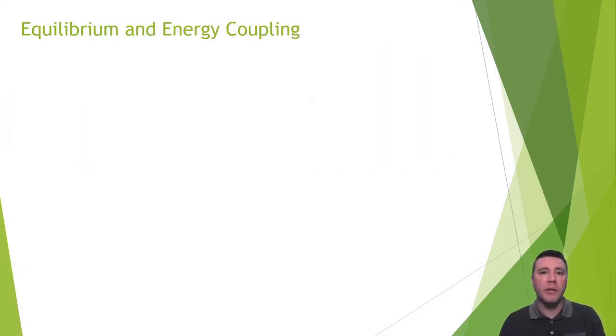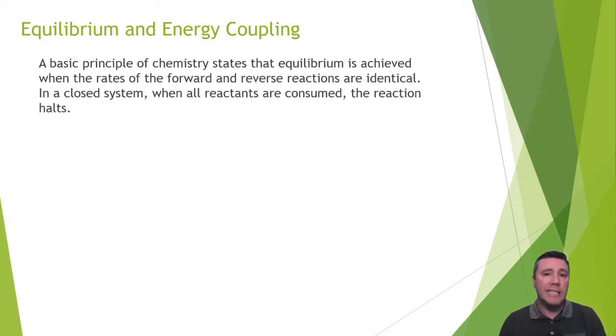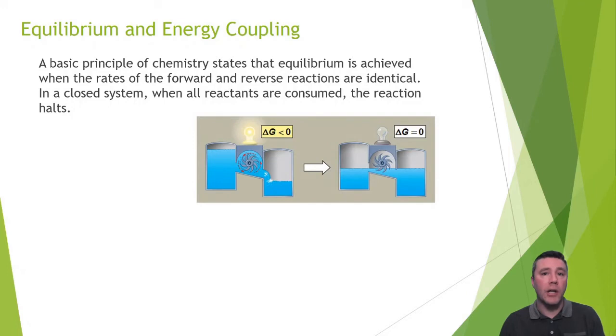In chemistry, one of the basic principles studied is that of equilibrium. The idea is when the rate of the forward and reverse reactions are the same, a state of equilibrium has been achieved. In a closed system in which no new reactants are introduced or no products are removed like a beaker or flask, the reaction halts. This illustration represents that principle. Initially, on the left, the higher water level represents the reactants and the lower level on the right, the products. In a state of disequilibrium, the water flows, lighting up the light bulb, which represents the reaction. Once equilibrium has been achieved, however, no reaction occurs and there's no light.